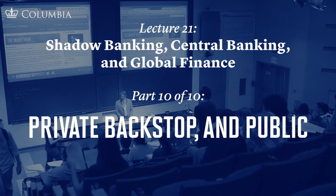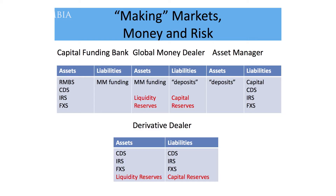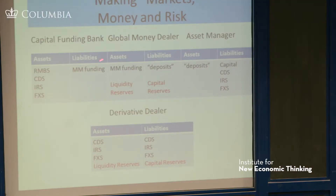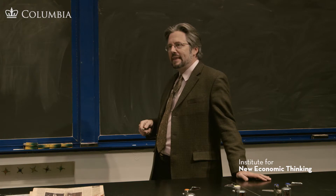Here's just two more slides. Focusing on the dealers now: if you don't want the central bank to be acting every day, you need to put some robustness in the dealers. It's the dealers you want to be focusing on. So you want some kind of liquidity reserves there, some kind of capital reserves there — in particular down here with the derivative dealer, because that's the new one.